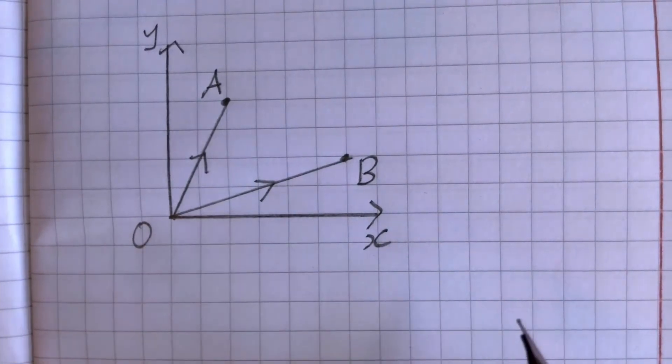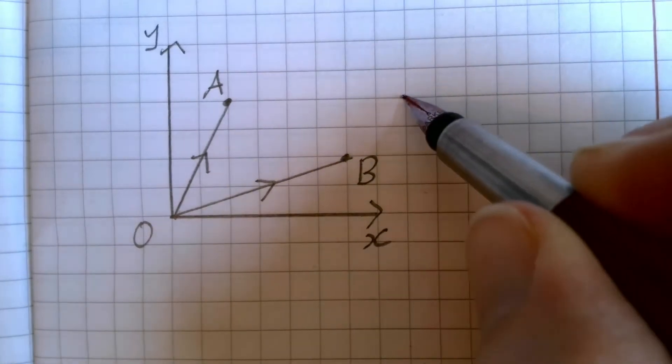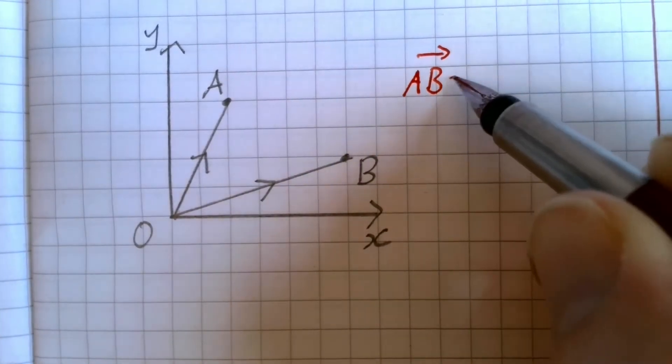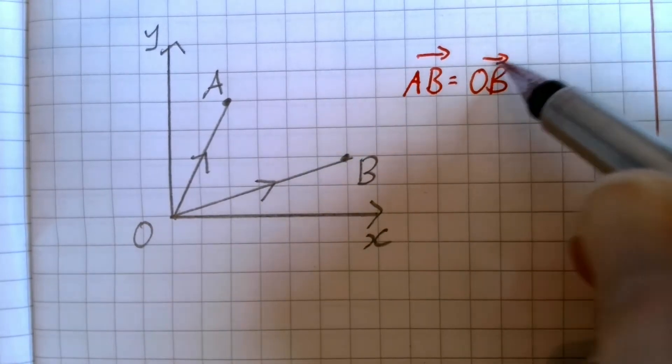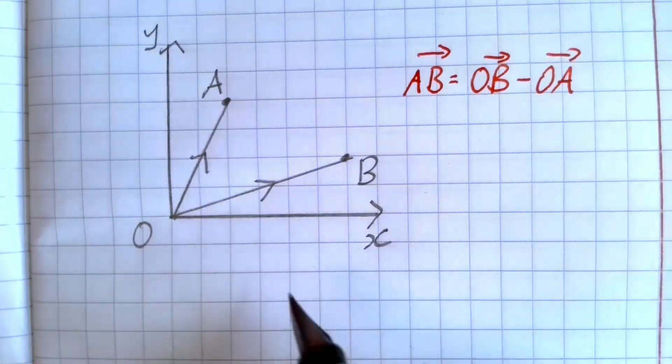You want to make a note of this little diagram, and the statement I'm going to give you now is that AB is always going to be equal to OB take OA, and what does that mean?